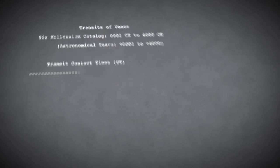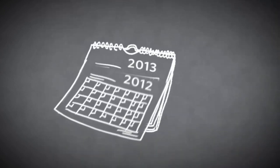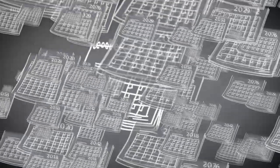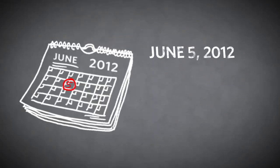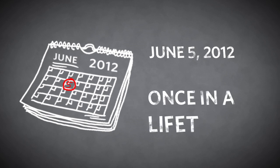Transits of Venus occur at complex intervals, and the last time one occurred was in 2004. However, the next transit of Venus won't take place for another 105 years in 2117, making this celestial event a truly once-in-a-lifetime occurrence.